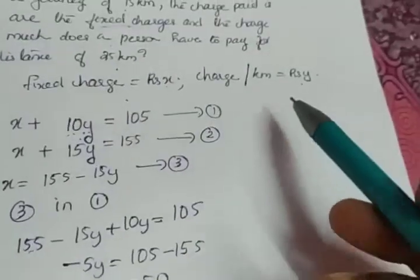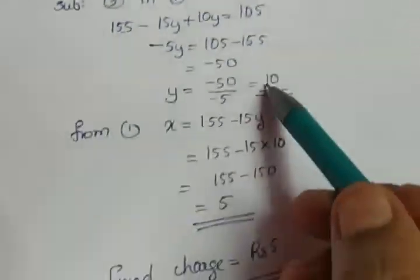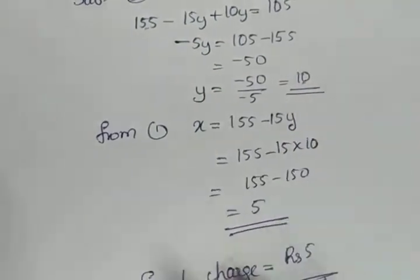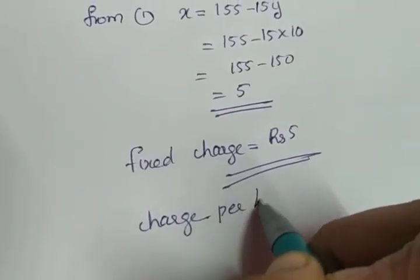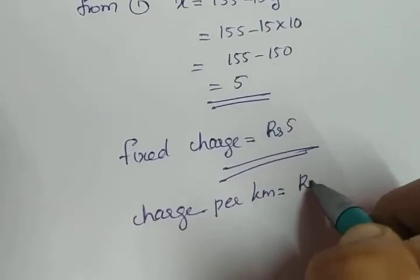And what about y? y was the charge per kilometer, and we got the value of y as 10 rupees. Charge per kilometer is equal to 10 rupees.